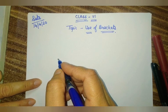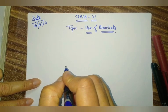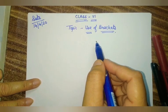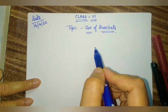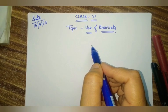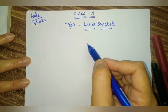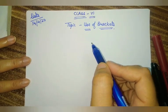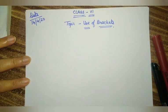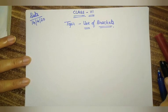Good morning students. Today we are going to discuss how to use brackets — that means we are going to learn the use of brackets. Students, the question arises: where do we use brackets? We use brackets whenever two operations are given together and we need to make them separate. I am going to explain this with the help of one example.